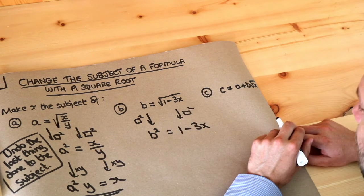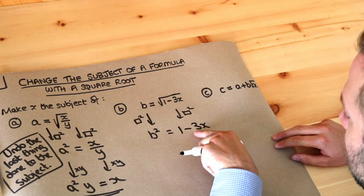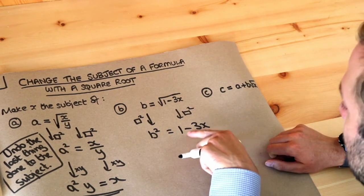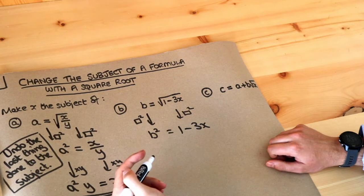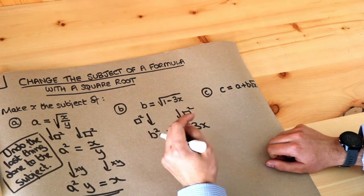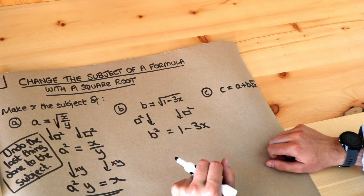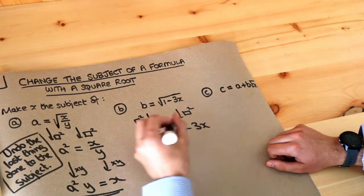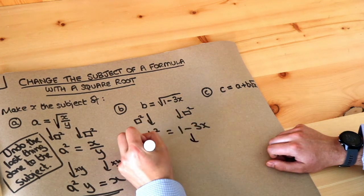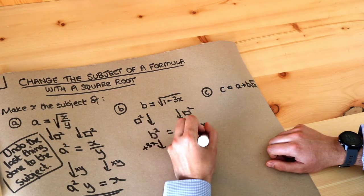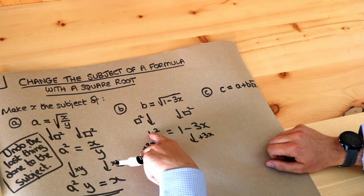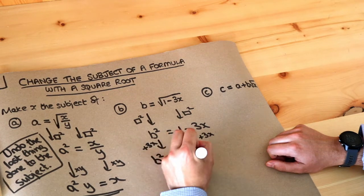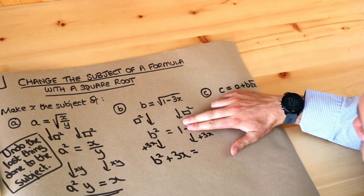This is a bit complicated because x is in a negative term being subtracted from something. Some students like to think of this as minus three x plus one and subtract one from both sides first, then divide by minus three. I prefer x to be on the side where it's positive, so I'm going to add three x to both sides. That gives b squared plus three x on the left, and adding three x gets rid of the minus three x leaving one.